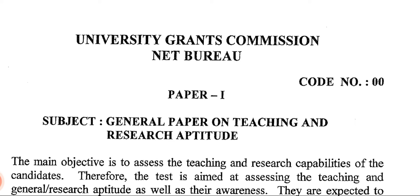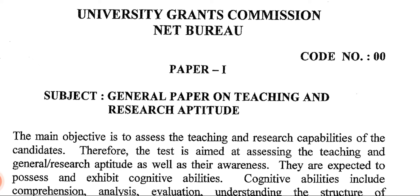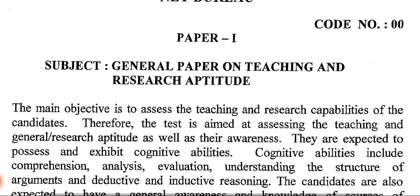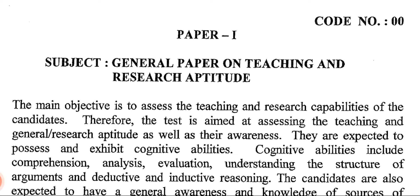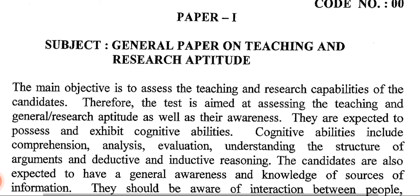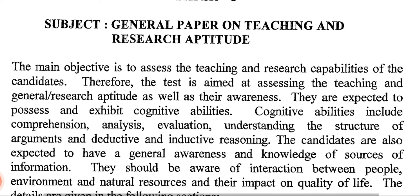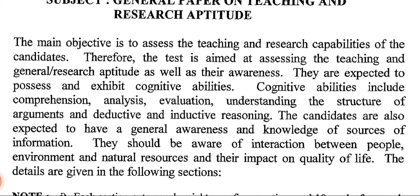Paper 1's subject name is 'General Paper on Teaching and Research Aptitude.' The main objective is to assess the teaching and research capabilities of the candidates. The test aims to assess teaching and general research aptitude as well as their awareness. Candidates are expected to possess cognitive abilities including comprehension, analysis, evaluation, understanding the structure of arguments, and deductive and inductive reasoning. They are also expected to have general awareness, knowledge of sources of information, and awareness of interaction between people, environment, natural resources, and their impact on quality of life.